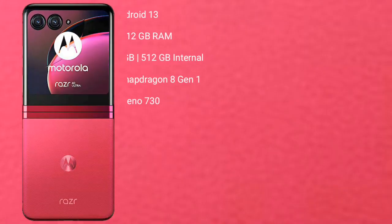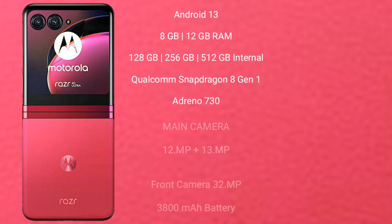The Motorola RAZR 40 Ultra runs on Android 13. It comes with 8GB or 12GB of RAM, 256GB of internal storage, a Qualcomm Snapdragon 8 Gen 1 processor, and an Adreno 730 GPU.